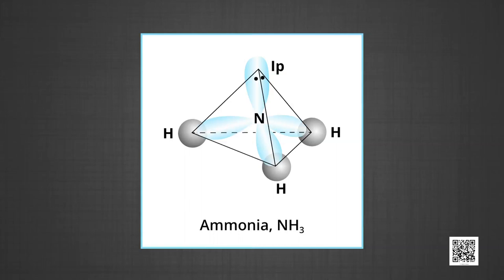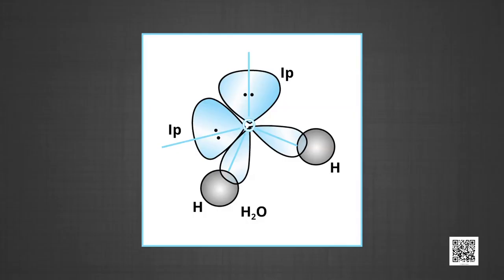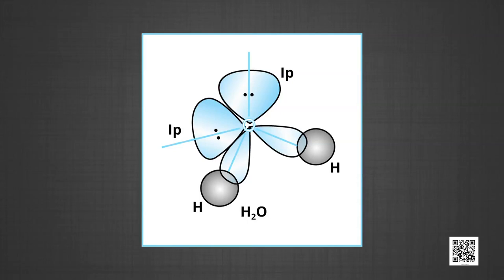In the case of water, the four oxygen orbitals — one 2s and three 2p — undergo sp³ hybridization forming four sp³ hybrid orbitals, out of which two contain one electron each and the other two contain lone pairs. These four sp³ hybrid orbitals acquire a tetrahedral geometry with two corners occupied by hydrogen atoms and two by lone pairs. The bond angle is reduced to 104.5° from 109.5°, and the molecule acquires a V-shape or angular geometry.